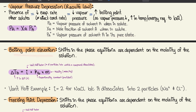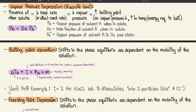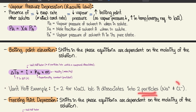Boiling point elevation: phase equilibria shifts depend on the molality of the solution. The equation is ΔTb = i × Kb × m, where i is the van't Hoff factor (number of particles a compound dissociates into), Kb is a proportionality constant (provided), and m is molality. For NaCl, i = 2 because it dissociates into Na⁺ and Cl⁻.